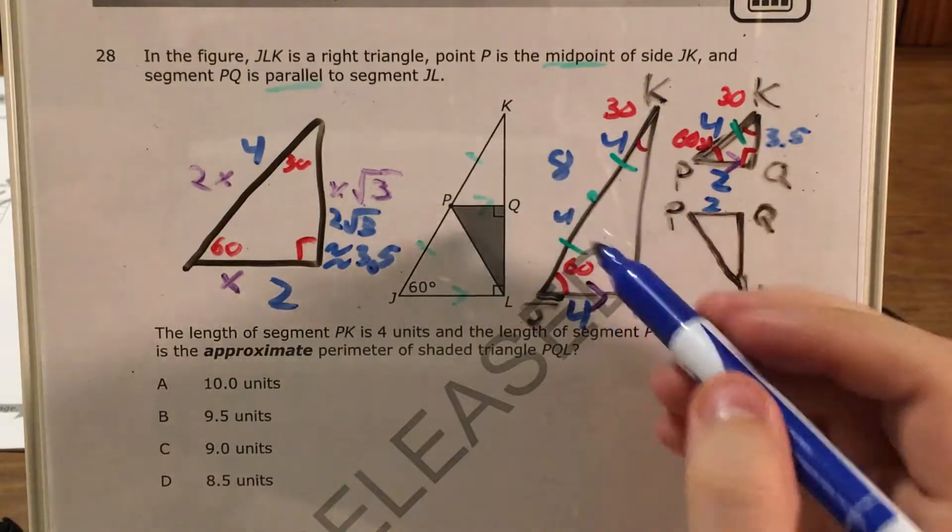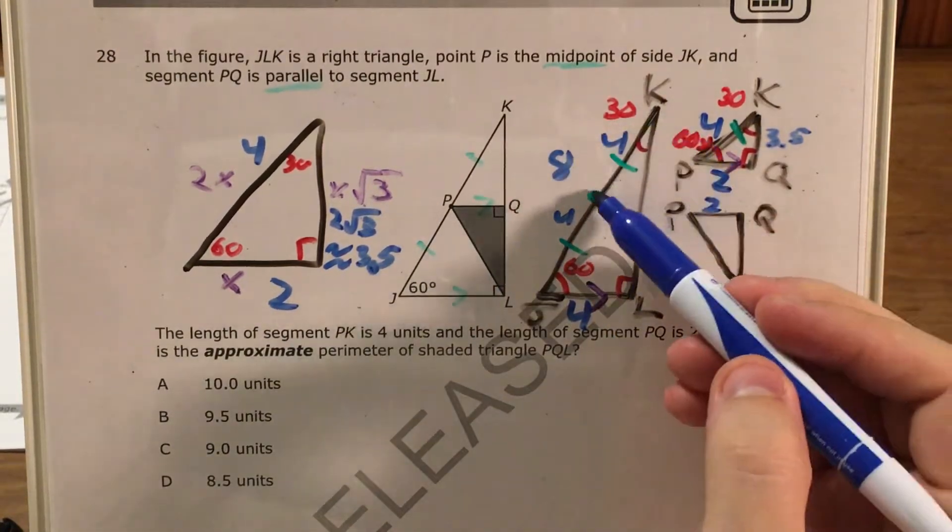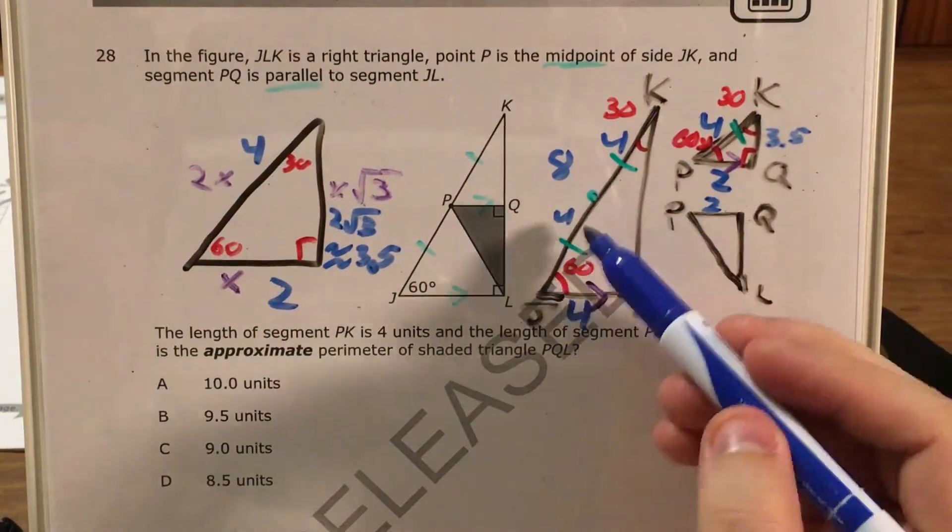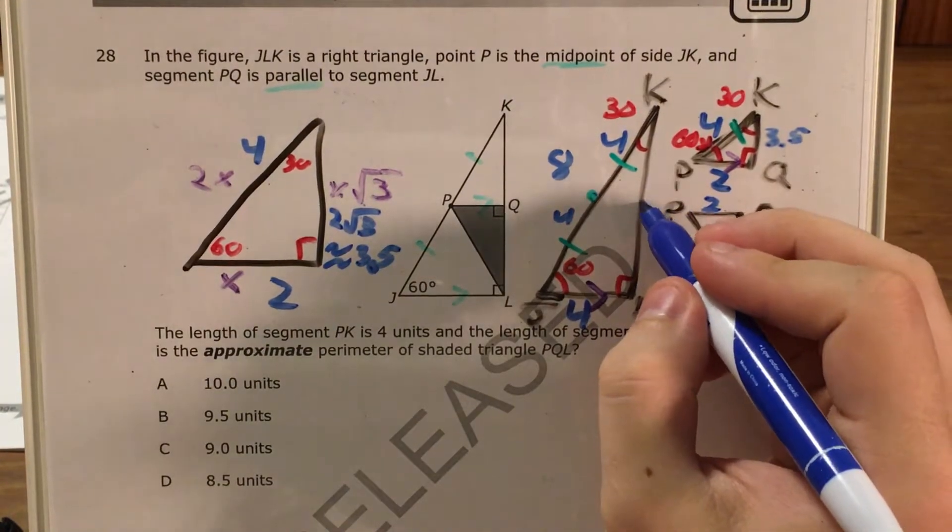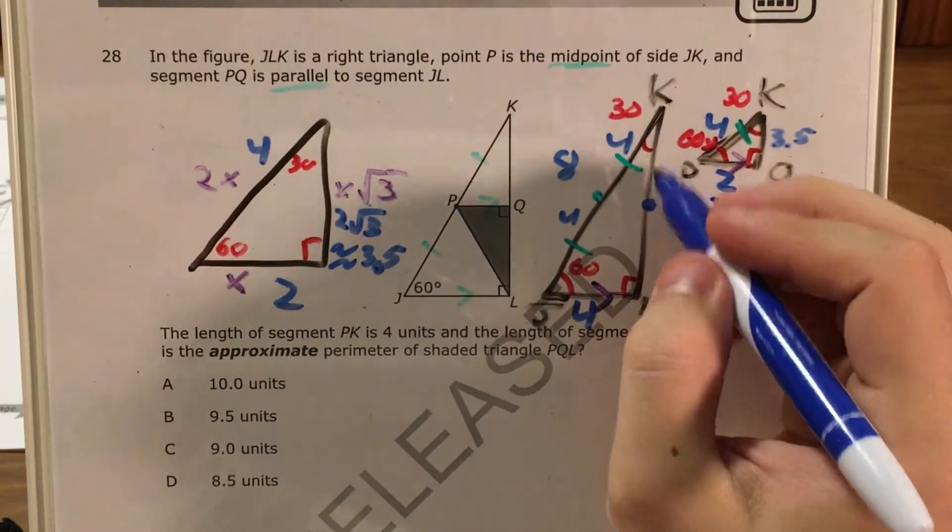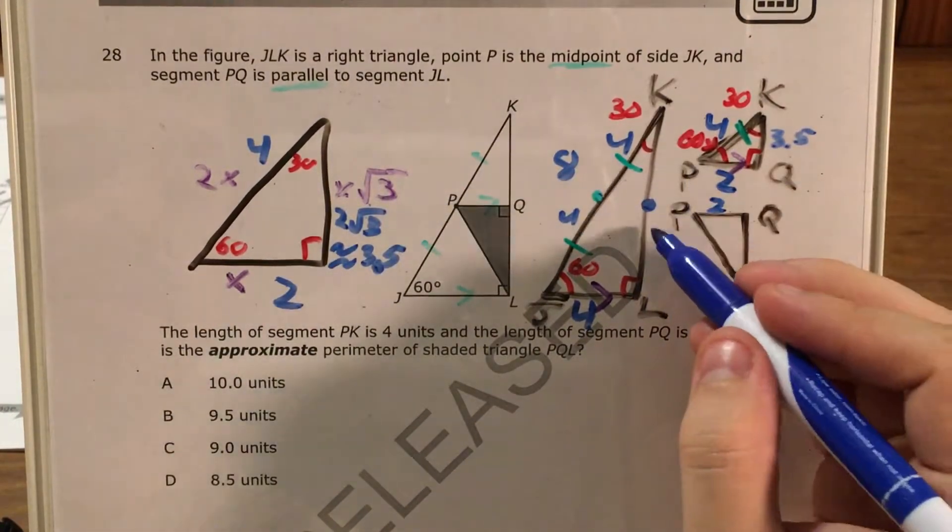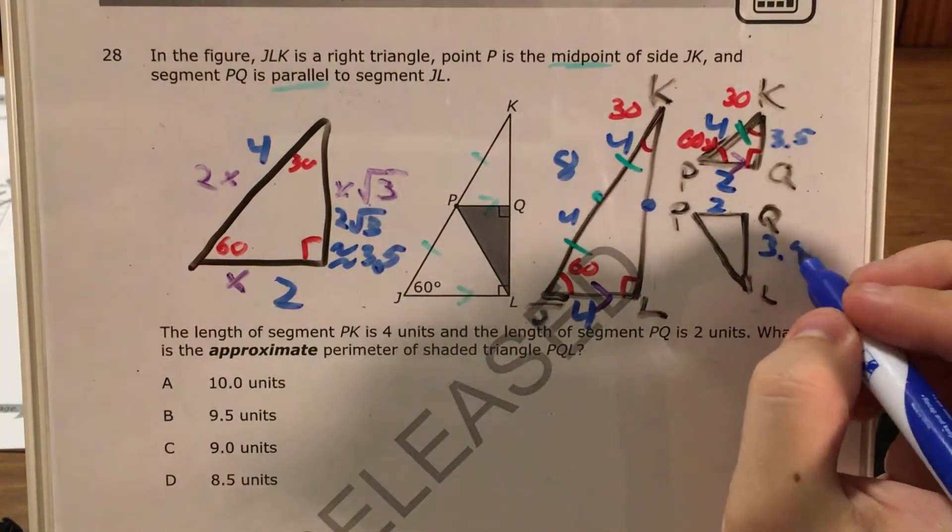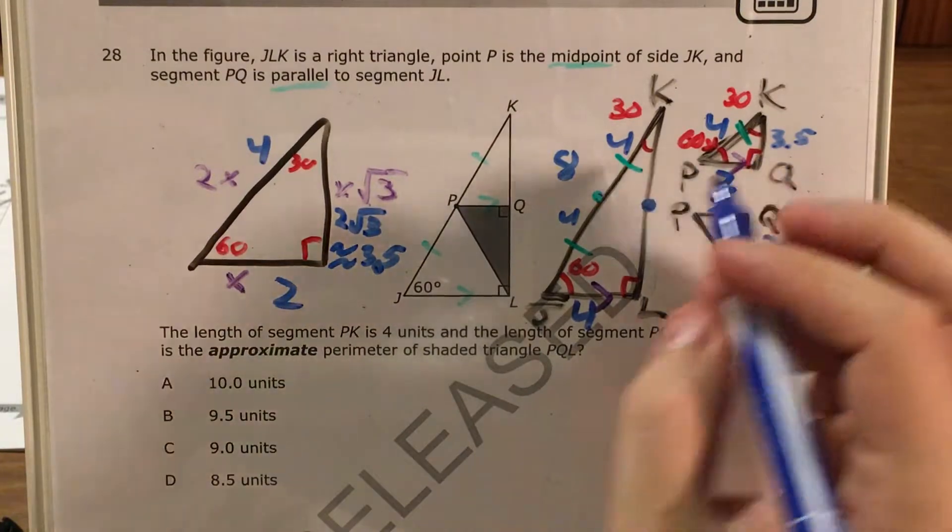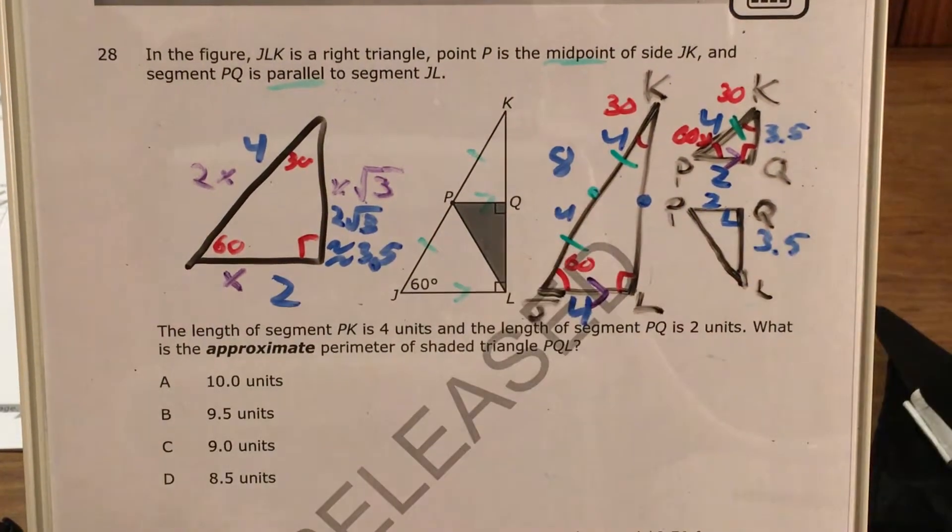So this is 3.5 or 3 and 5 tenths. And now if you look back at this triangle, this part of this long side has a twin here, which means I can pretty reasonably say that this part of this longer leg has a twin down here. So if this is 3 and a half, this has to also be 3 and a half. And now I'll say that this one is a right angle. I'll remember to write that.